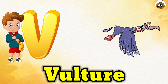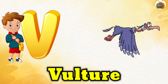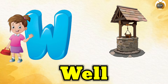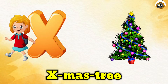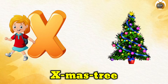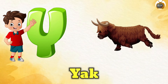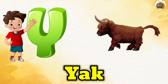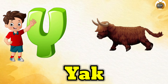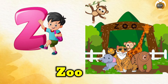B for balsar, W for whale, X for axma tree, Y for yak, Z for zoo. Boom.